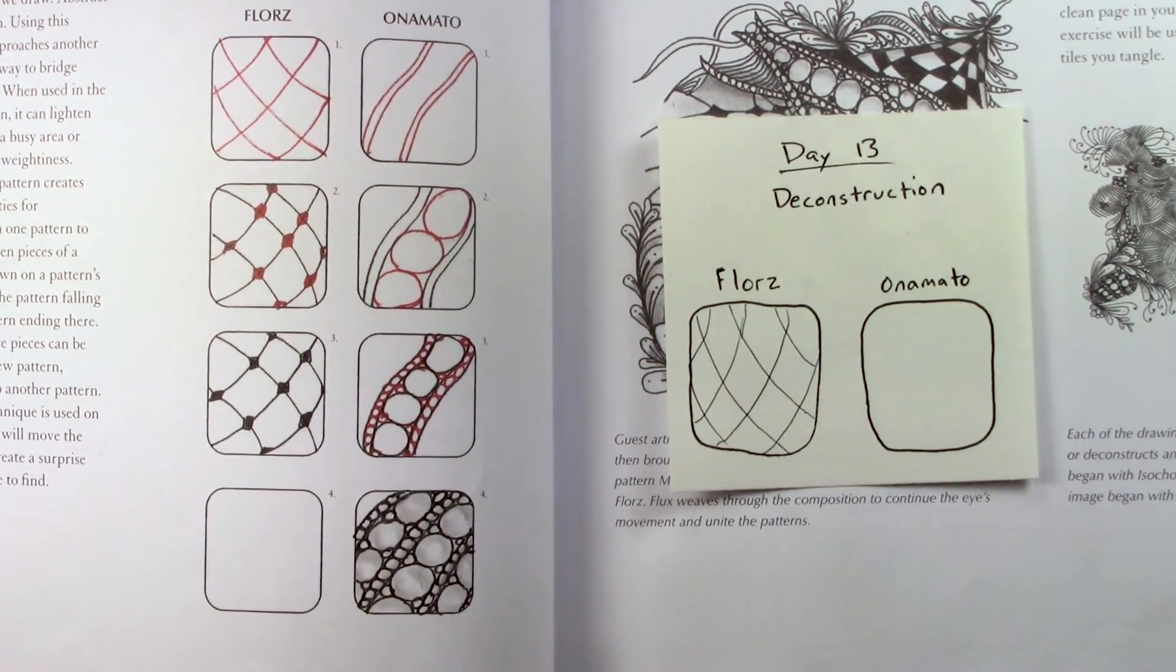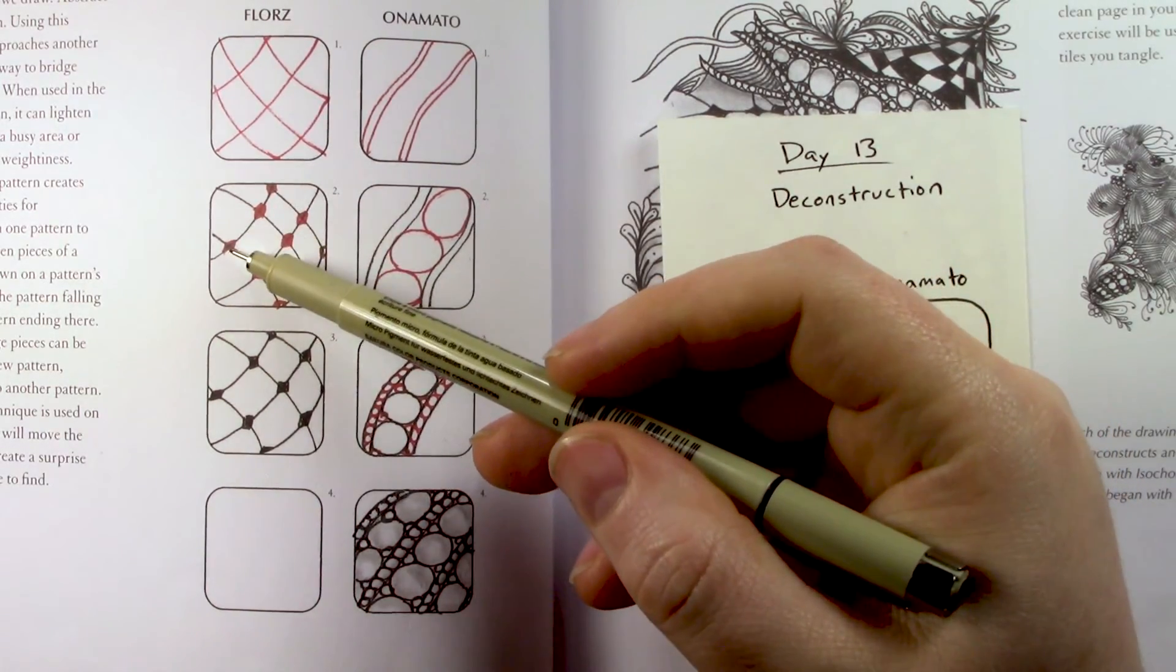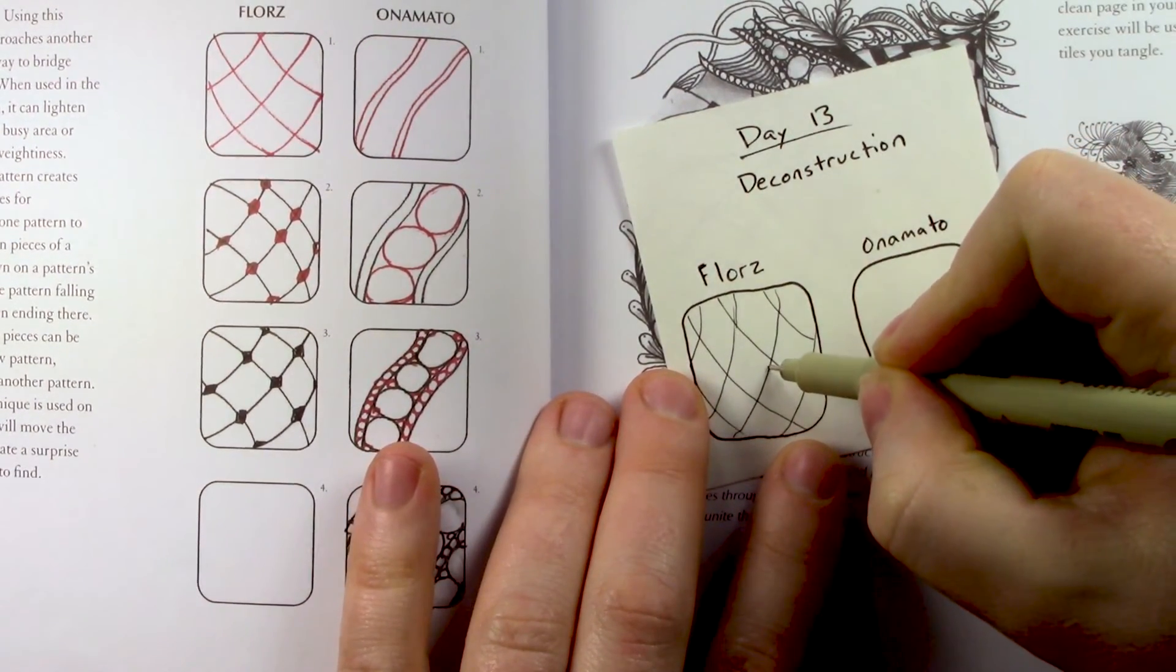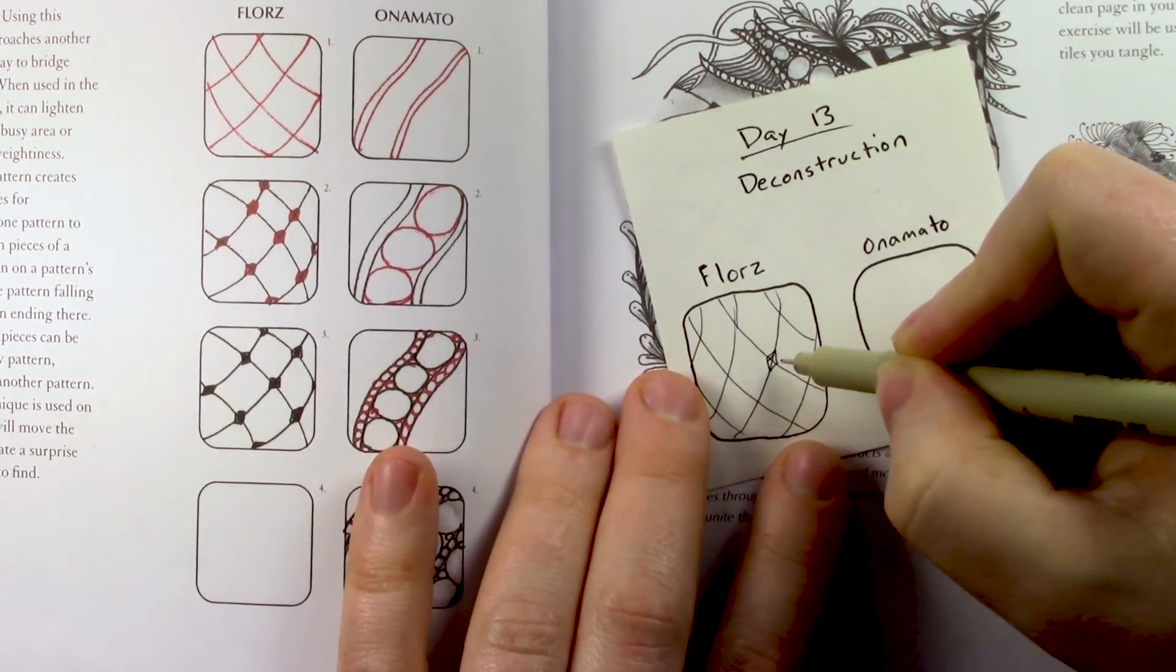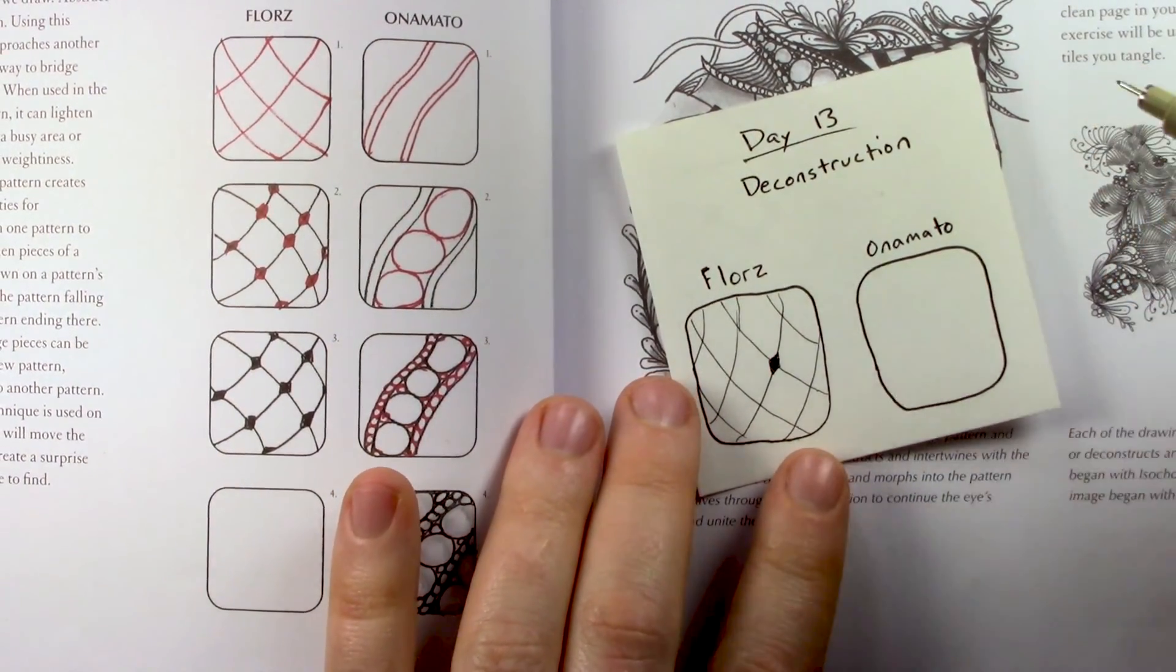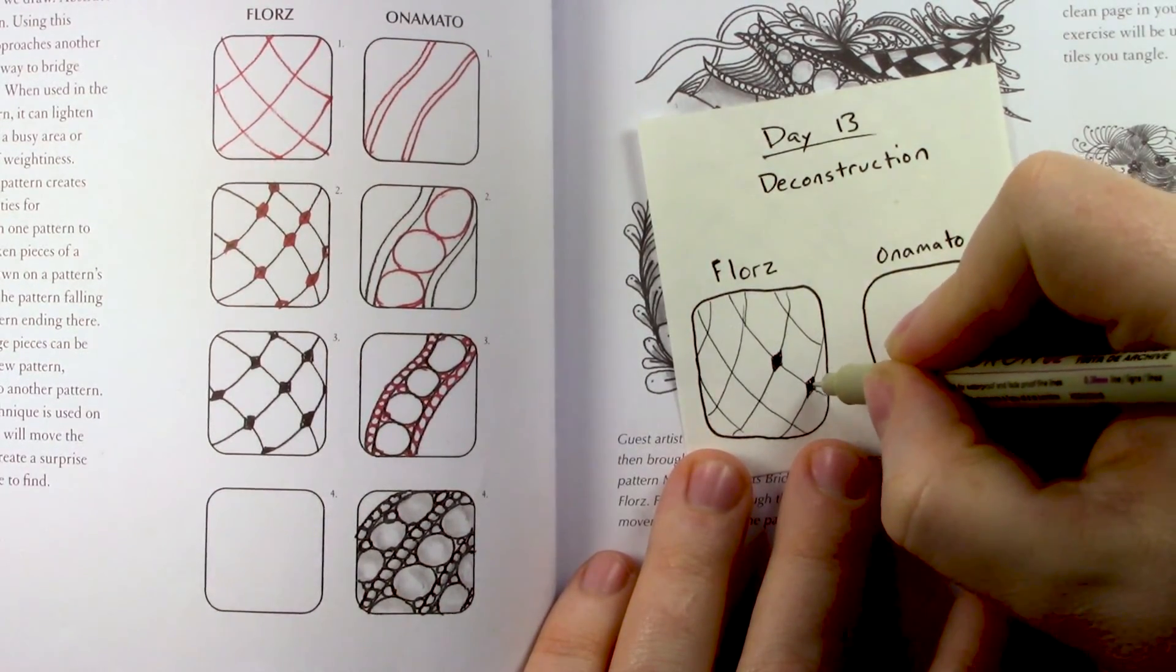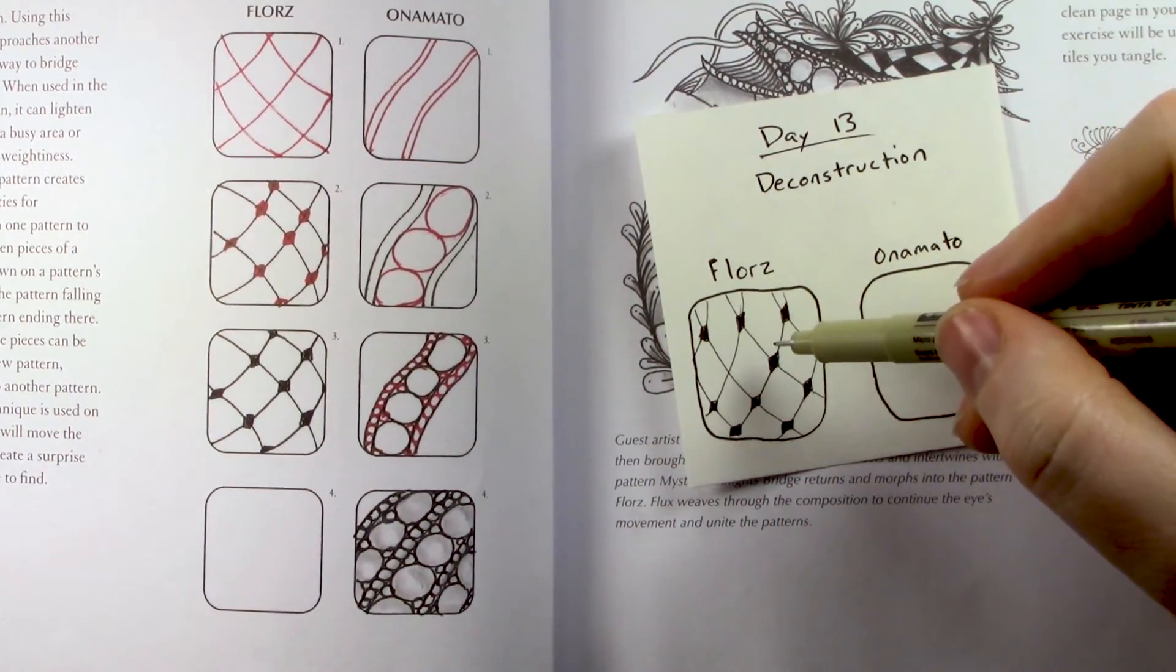You can see the only thing we're doing to this pattern is looking where those lines crisscross and making little diamonds at those crisscross points. So I'm going to make a diamond that connects from line to line to line to line, and then darken it in. That's all there is to it. I just do the same thing on every one of these crisscross points. There you go. That is a super simple pattern. It's very light and airy.